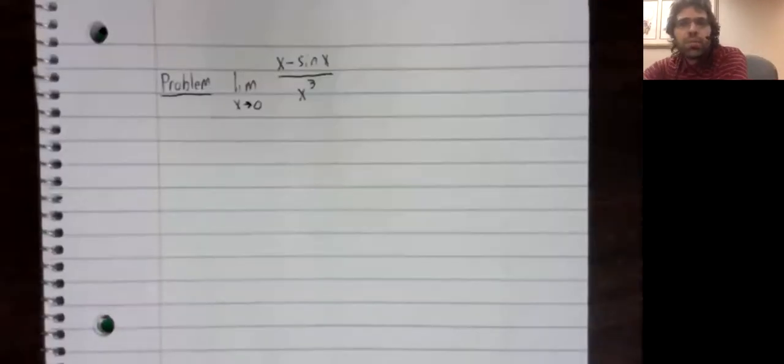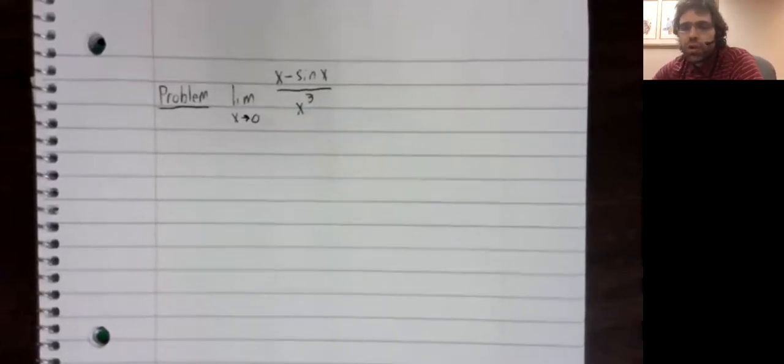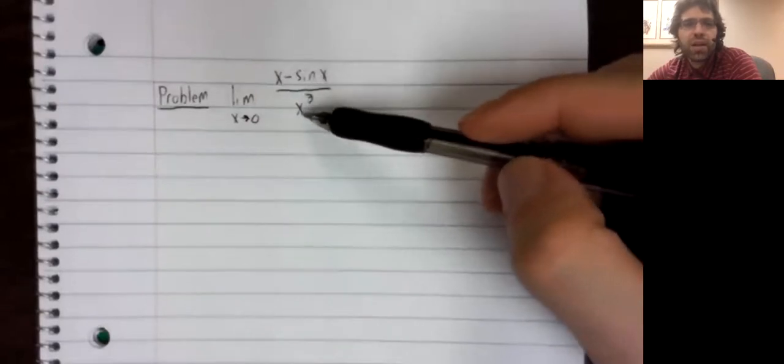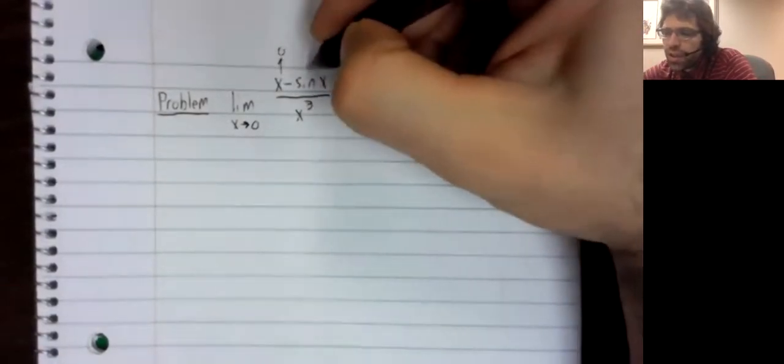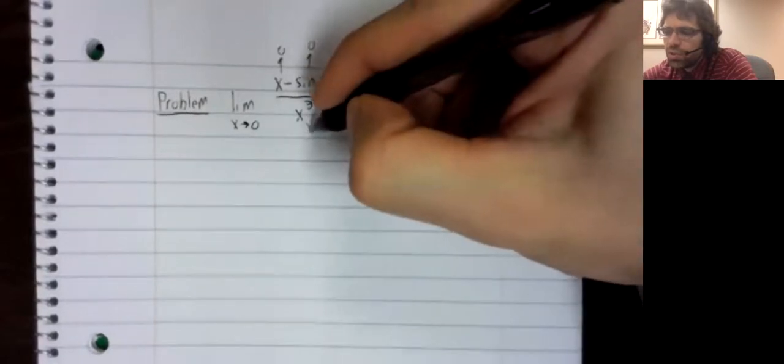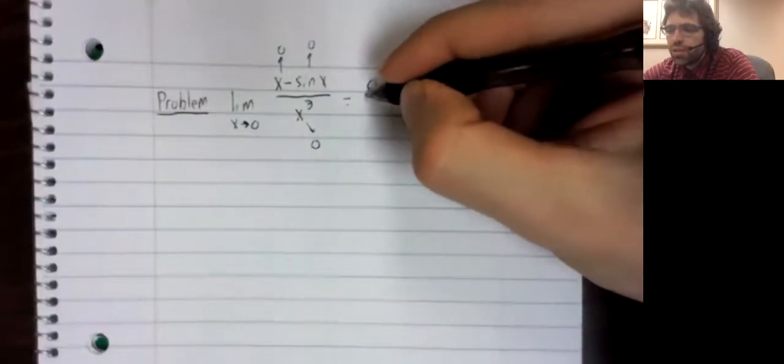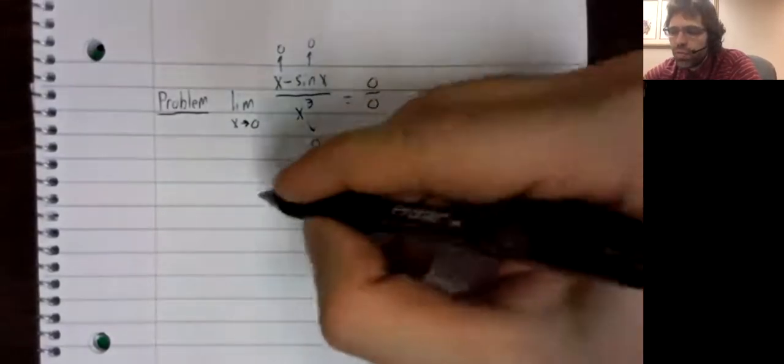Let's do a problem where L'Hôpital's rule doesn't fail, but does require a certain amount of work. The limit as x approaches 0 of x minus the sine of x divided by x cubed. As x goes to 0, this is indeed an indeterminate form.